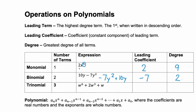Our third example is a trinomial — tri meaning 3, we have three terms here. The leading coefficient: what's the number in front of our very first term? There isn't a number there, but remember we always have that invisible 1. So the leading coefficient here is 1. And the degree — our largest exponent, which is on our leading term — is 6.